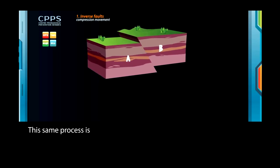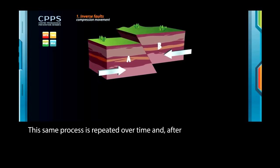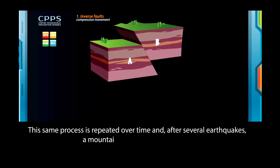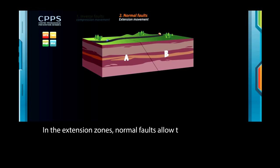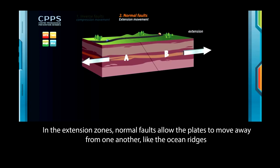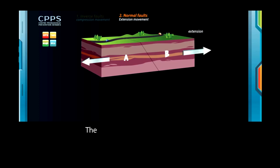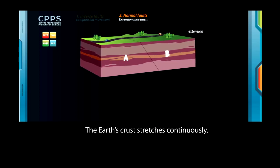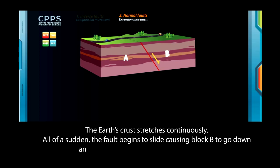This same process is repeated over time and, after several earthquakes, a mountain and valleys are created. In the extension zones, normal faults allow the plates to move away from one another, like the ocean ridges. The Earth's crust stretches continuously. All of a sudden, the fault begins to slide, causing block B to go down and block A to go up. This is the earthquake.